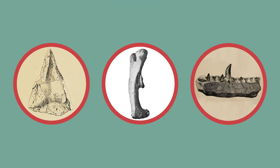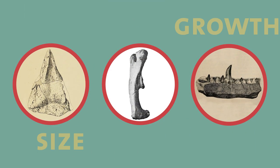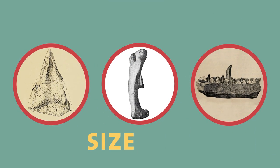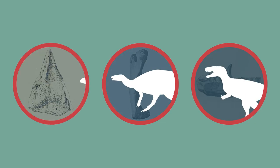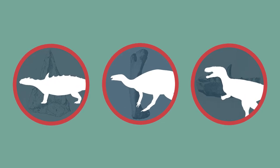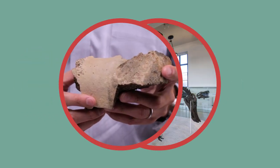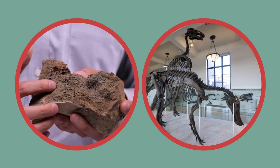Paleontologists can learn a lot from just little bits of bone. We can learn about how the dinosaur grew or what the overall size was. And in a lot of cases, we can tell to which group these fossils belong to. So this is a piece of bone from a duck-billed dinosaur.